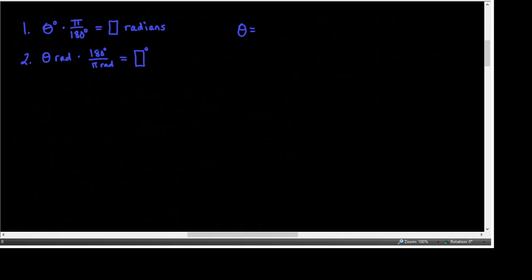Co-terminal angles are another formula to add: some original angle plus a multiple of 360 degrees, where n is an integer. Keep a separate page tracking all formulas, and as soon as I give you a formula, start memorizing it — there's a lot to memorize and you don't want to put it off.